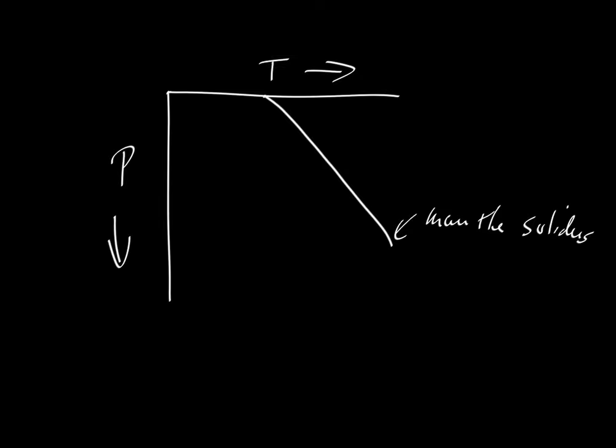So now let's plot the geotherm. The normal geotherm might look something like this, where we have a very shallow slope, the way we've drawn this diagram here, where we have the conductive lid, the lithosphere, and then it'll turn around and become very steep when we hit the convective geotherm.